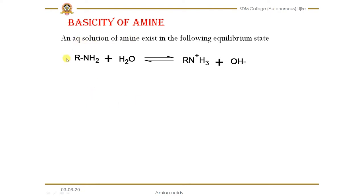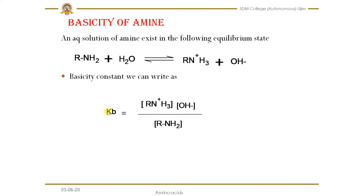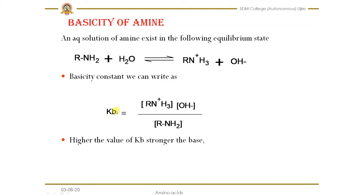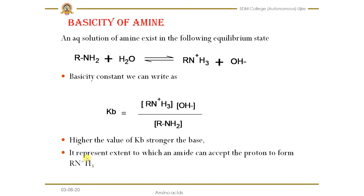We know amines are basic in nature, but let's see how we can confirm that. When amines are added to an aqueous solution, the lone pair electrons of nitrogen accept a proton, resulting in RNH3+. The basicity constant KB represents this tendency — if an amine accepts a proton to a higher extent, we get a greater KB value, meaning a stronger base.